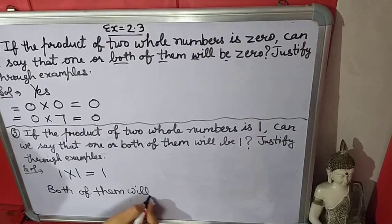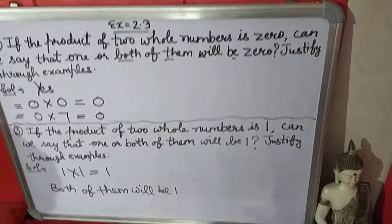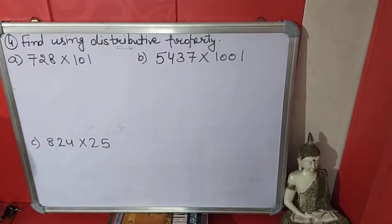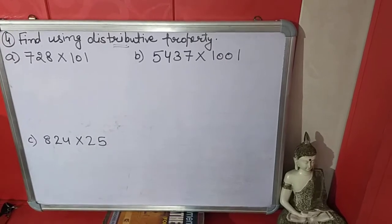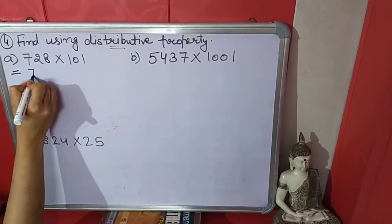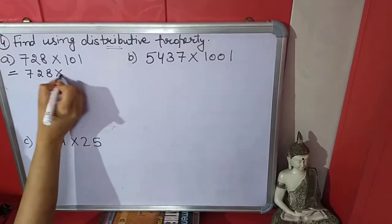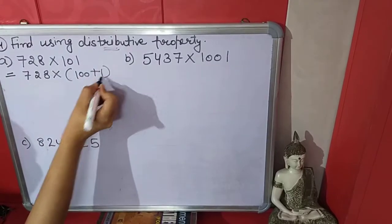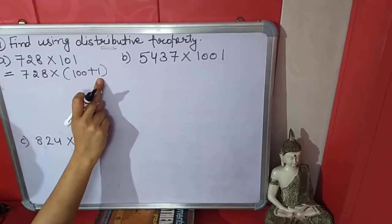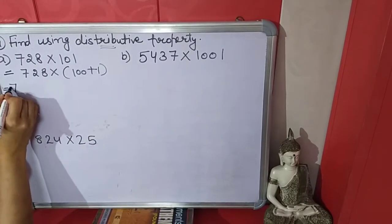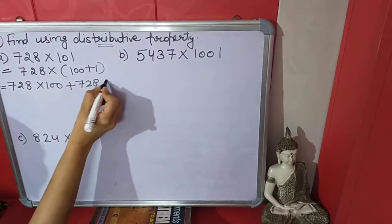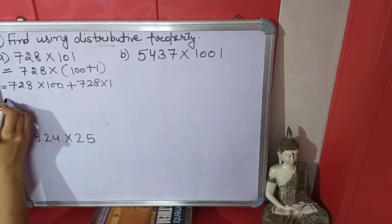Now the fourth question: find these solutions using the distributive property. We will distribute the number. We will break 101 into 100 plus 1. So 728 multiplied by 101 becomes 728 multiplied by 100, plus 728 multiplied by 1. Now multiply these two.